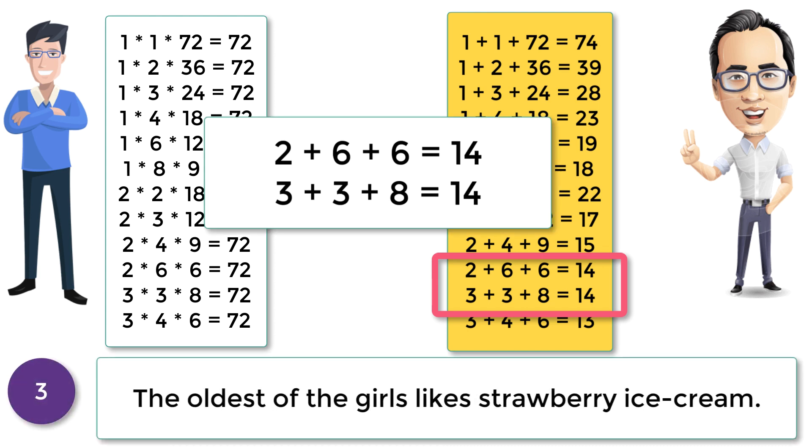So let's check the third clue now. The third clue says that the oldest of the girls likes strawberry ice cream, which clearly says that Anand has an oldest girl and not two. That means the oldest daughter cannot be of two numbers. Hence we can rule out 2 + 6 + 6 = 14 option because the oldest daughters are two in this case.